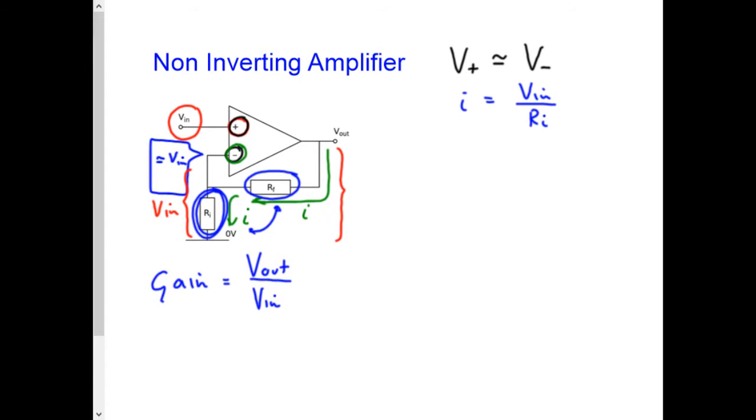so the total resistance is the sum of these two added together. So for the output, we can write I equals V out divided by RF plus RI. OK, now the current is equal in both resistors and therefore we can write V out over RF plus RI equals V in over RI.